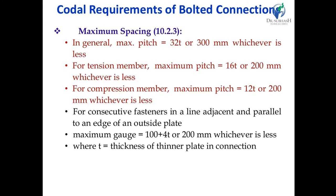For a tension member, maximum pitch is equal to 16 times T or 200 mm, whichever is less. For a compression member, maximum pitch is 12 times T or 200 mm, whichever is less. These are the three criteria to provide maximum distance between center-to-center bolts, called pitch. The general criteria apply when using the connection in tension or compression, and the criteria change accordingly. For fasteners in a line along or parallel to the edge, the outside plate should be provided to maintain this maximum spacing.